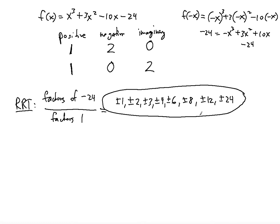From my intuition, looking at x to the third plus 3x squared, something tells me that maybe 3 is a zero. So we're going to use synthetic division to test whether 3 is a zero. I'm going to put the 3 outside, and then on top I'm going to put the coefficients and constant of the polynomial in order from left to right: 1 — the coefficient of x to the third — then 3 — the coefficient of x squared — then negative 10, the coefficient of x, and then negative 24, the constant.